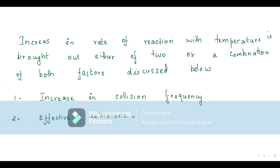To conclude, the increase in rate of a reaction with temperature is brought about by either or both of two factors: increase in collision frequency — the total number of collisions per second per unit volume — and increase in effective collisions — the fraction of total collisions that result in product formation. When temperature increases, one or both of these will increase.